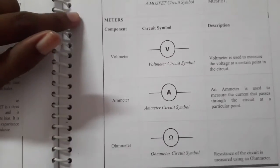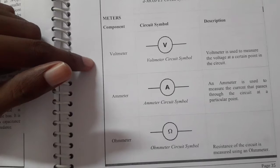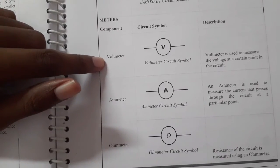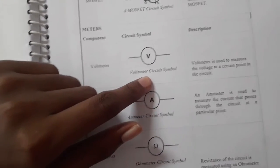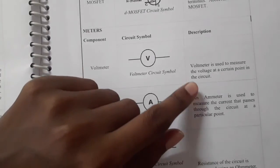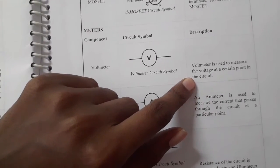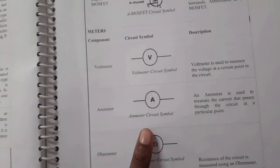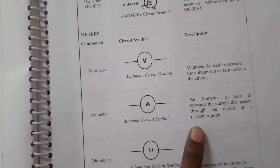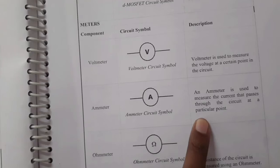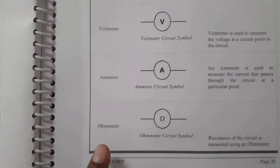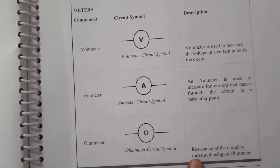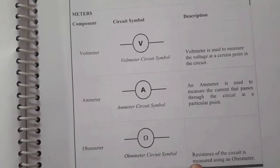Next we have meters and different types. First is the voltmeter — this is the circuit symbol, used to measure voltage. Next is the ammeter — this is the circuit symbol, used to measure current. Next is the ohmmeter — this is the symbol, used to measure resistance.